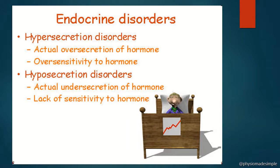Now, endocrine disorders. There are two main types: hypersecretion disorders and hyposecretion disorders. Hypersecretion means excessive secretion of a hormone, leading to excessive hormonal activity.